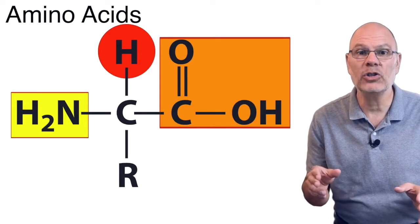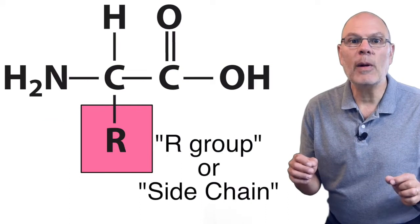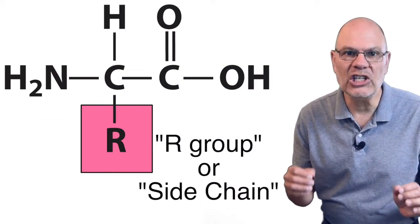a carboxylic acid functional group, and something else. That something else is represented by the letter R, and it's called an R group or a side chain.